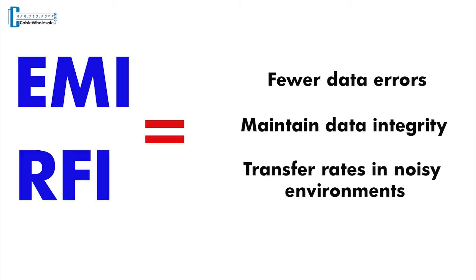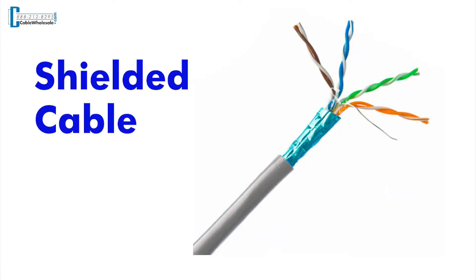The protection from EMI and RFI results in fewer data errors, which helps maintain data integrity and transfer rates in noisy environments. Quite simply, shielding allows the cable to do a job in environments that an unshielded cable could not due to interference.